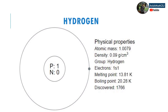Hydrogen physical properties: it has an atomic mass of 1.0079, its density is 0.09 grams per centimeter cubed. Its group is hydrogen and there is only one electron. Its melting point is 13.81 kelvin and boiling point is 20.28 kelvin. It was discovered in 1766.